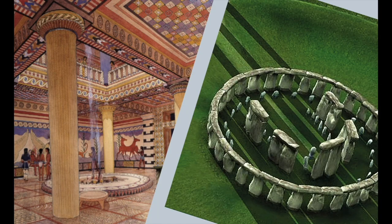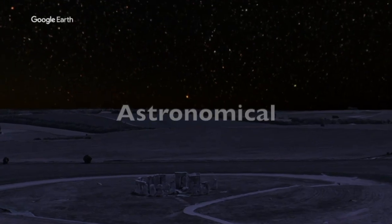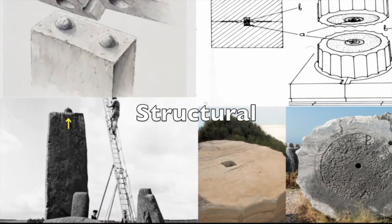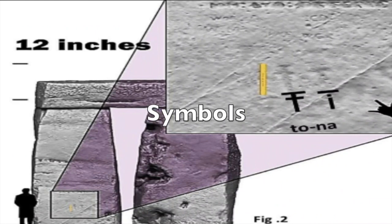There are four parts that indicate a relationship between the Minoans with Stonehenge. These are astronomical, structural similarities, historical references, and finally symbols carved on the Stonehenge stones.